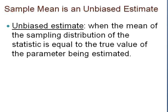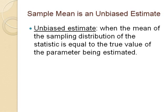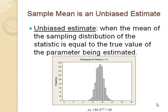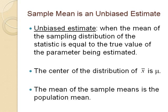The sample mean is an unbiased estimate of the population mean because the mean of the sampling distribution of this statistic is equal to the true value of the parameter being estimated. In other words, the center of the distribution of X bar is mu. The mean of all the sample means is the population mean.